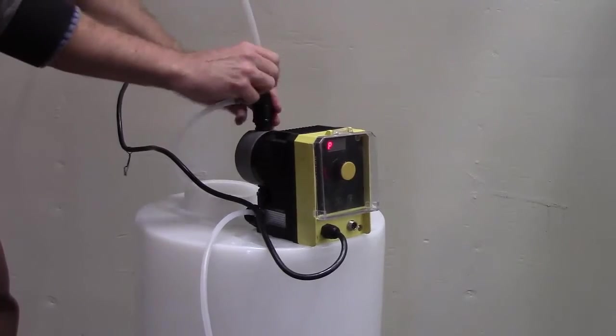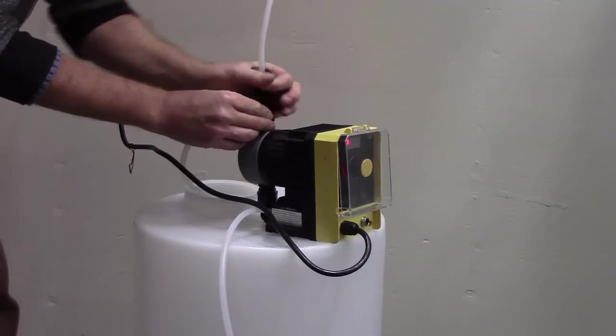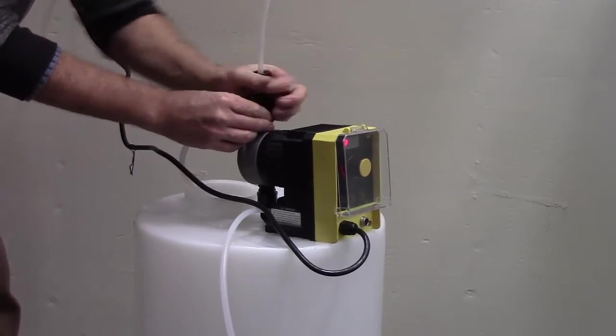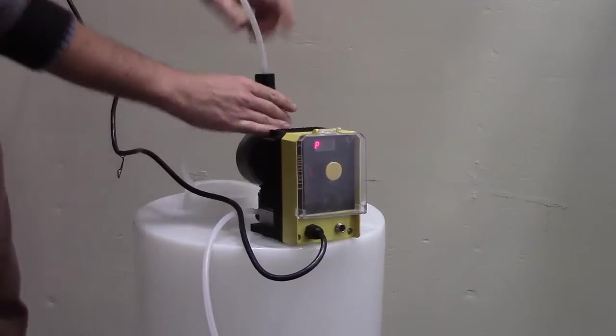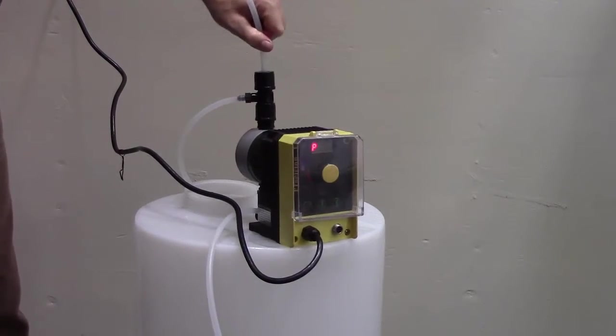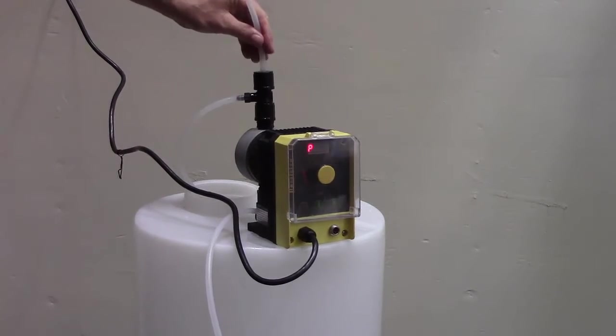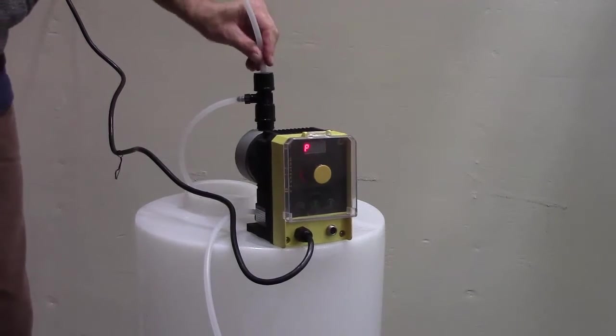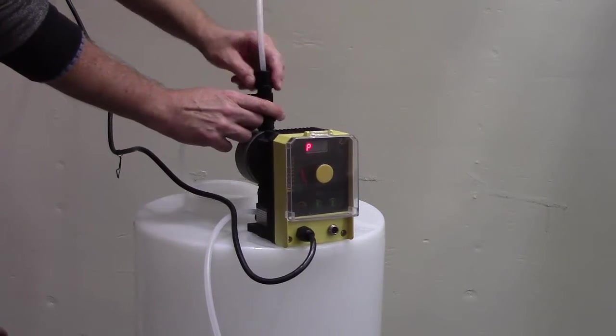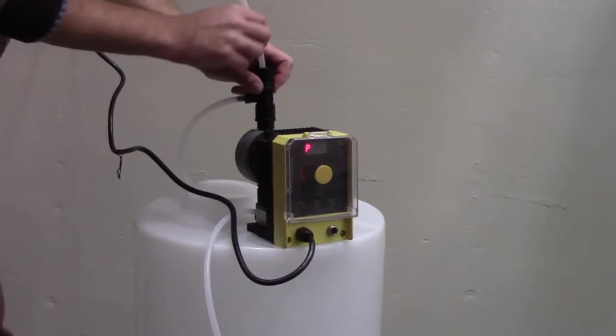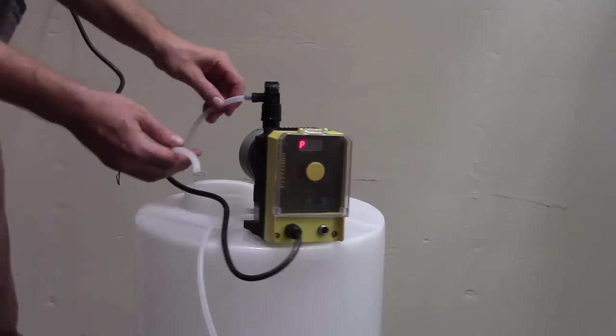Once it's on there, tug it a little bit. It doesn't want to come right out - it will come out if you pull really hard, but you don't want to pull really hard. Just tug it to make sure it doesn't come out easily. Once you've got that done on all three connections - the top, the bottom - the D gas return is a little bit easier.